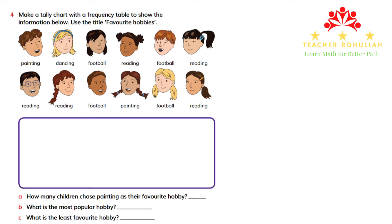Tally charts and frequency tables are tools used to record data. A tally chart is used to record data one by one as we work through it, while a frequency table is used to show how many times something occurs.